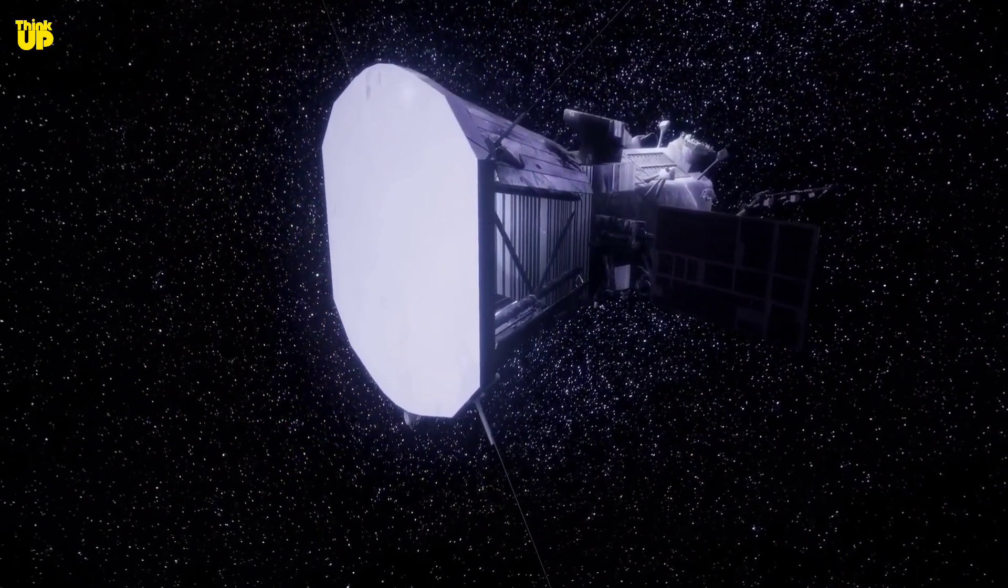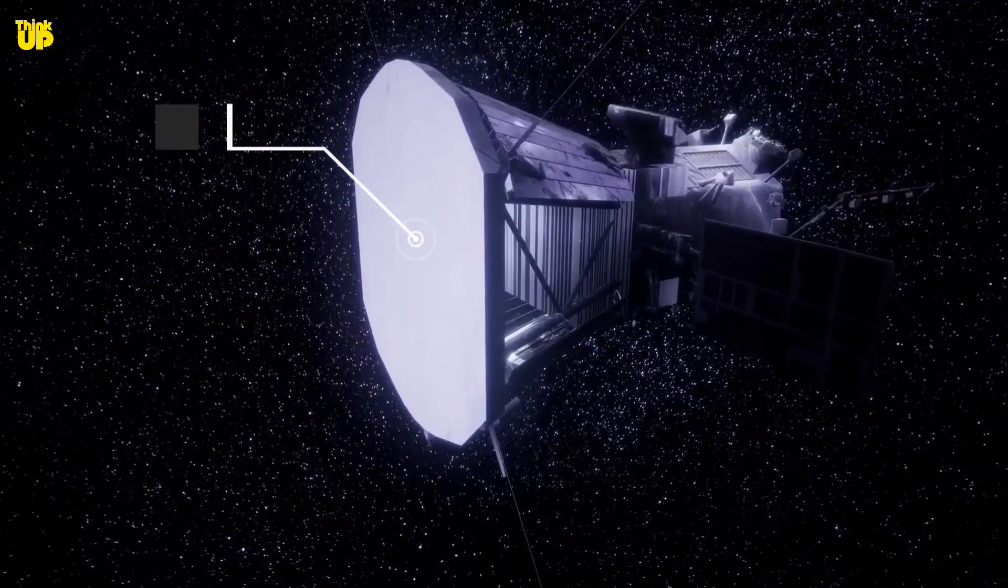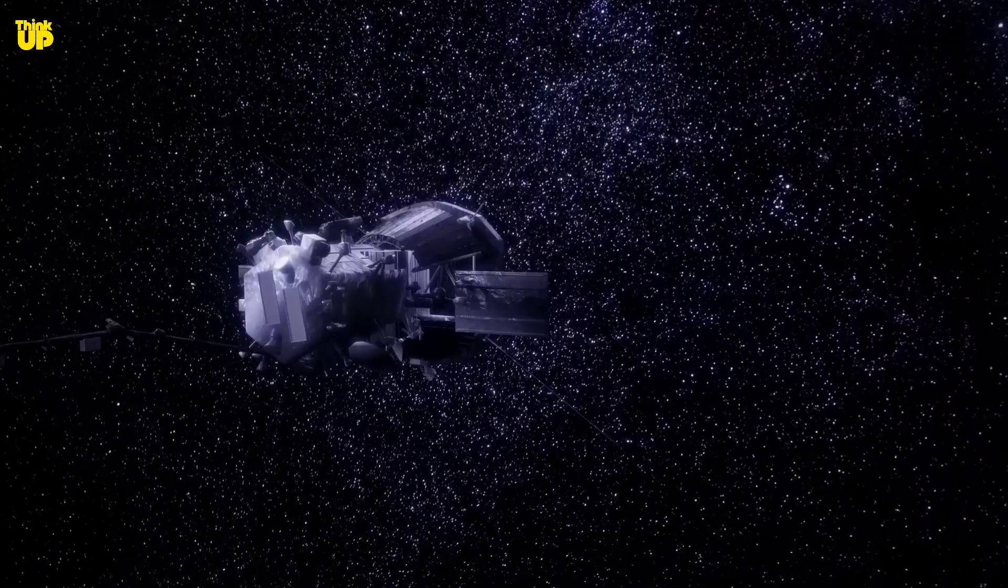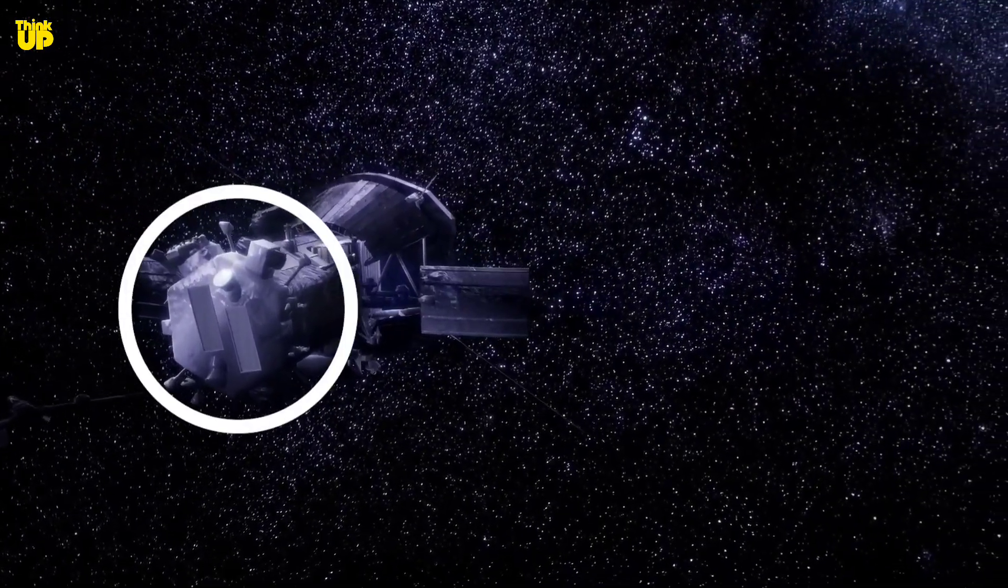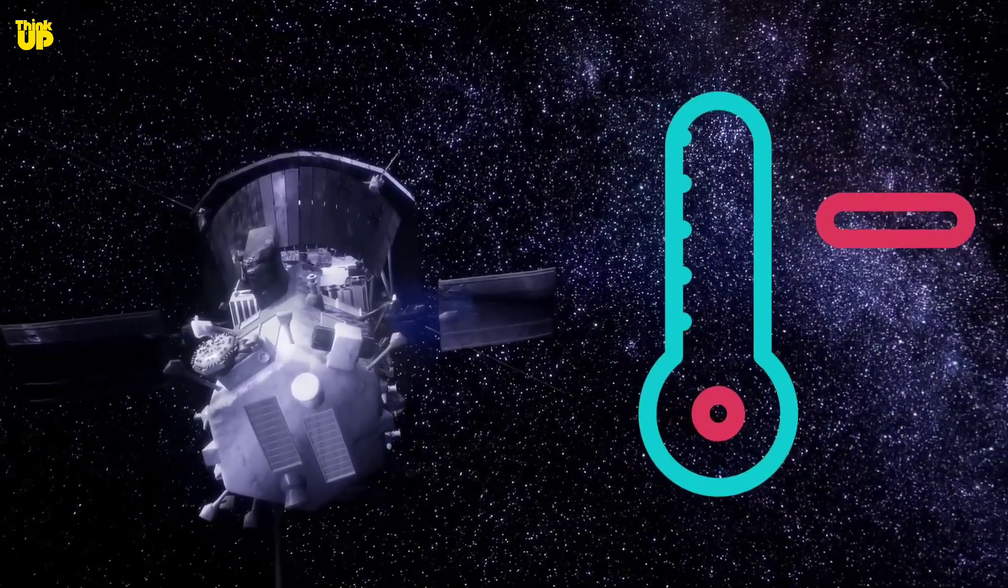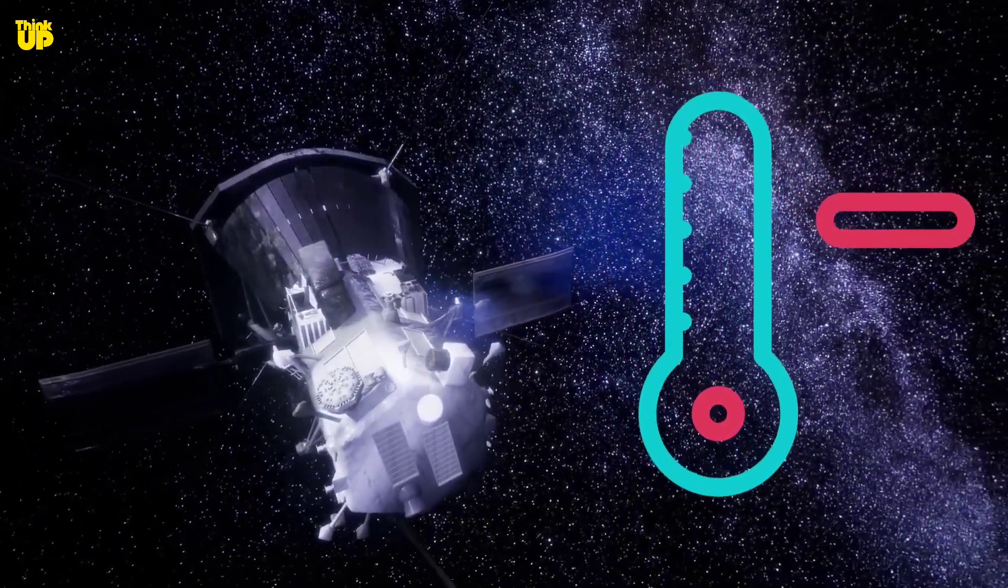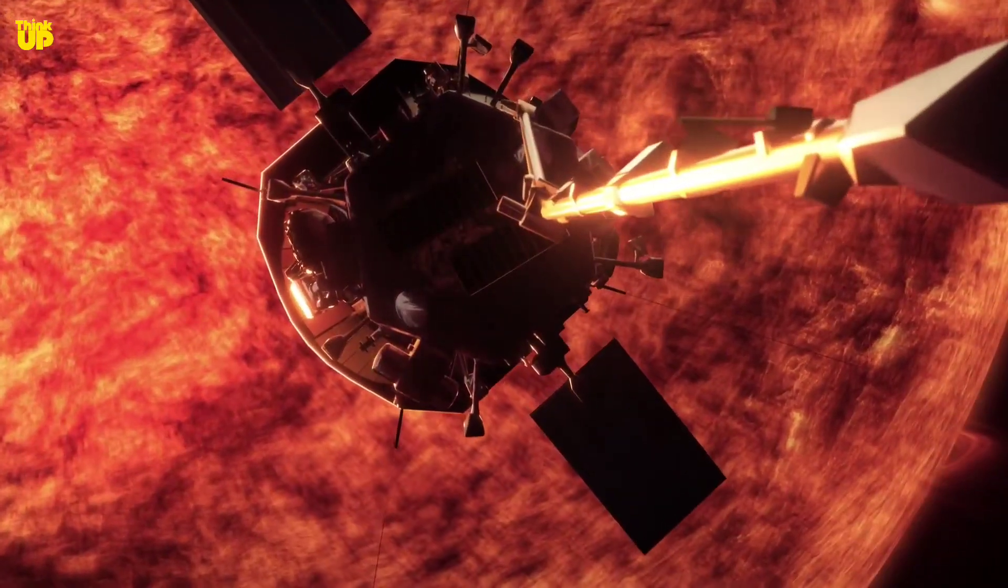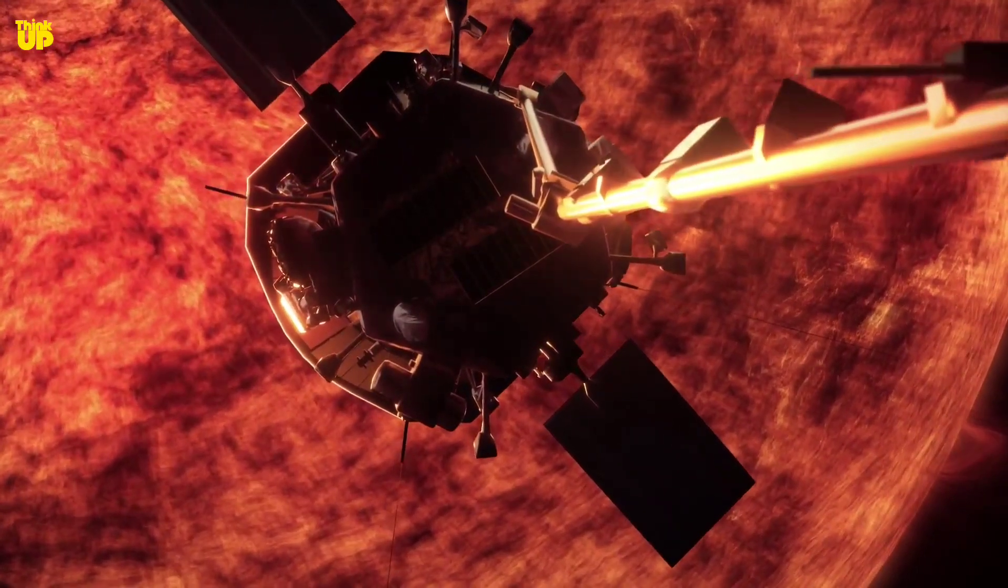Experts say that Parker Solar Probe's heat shield has a temperature of 1,200 degrees Celsius, while the temperature of its backside, where sunlight does not reach, is in minus, because it does not have particles that can transfer heat. This is the reason why the Parker Solar Probe is not melting even after being so close to the sun.